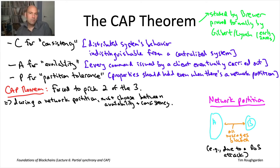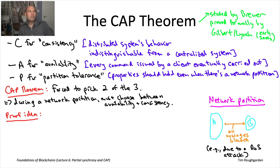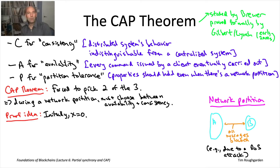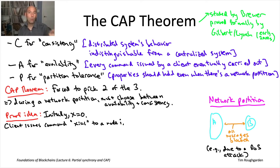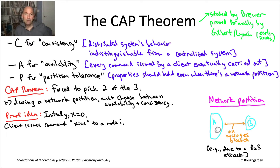For us, the most relevant way to think about the CAP theorem is that if you have P, then you cannot have both C and A. In the presence of a network partition, you must give up one of consistency or availability — and that is a fundamental trade-off you need to think about in designing your system. The intuition behind the CAP theorem is fairly straightforward, so let me walk you through a proof sketch.